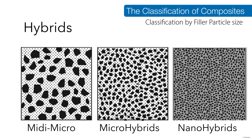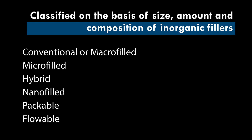Composites with mixed ranges of particle sizes are called hybrids — for example, mixing midi and micro particles produces a midi-micro hybrid. Micro and nano hybrids are made in the same way. Based on size, amount, and composition of inorganic fillers, composites are classified as conventional (macro-fill), micro-fill, hybrid, nano-fill, packable, or flowable.